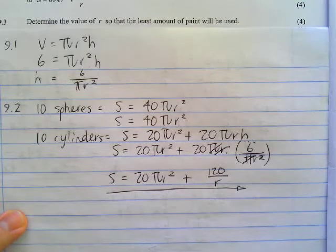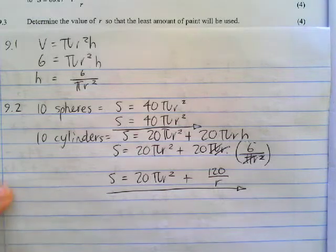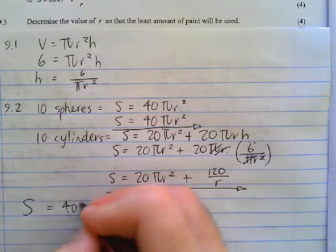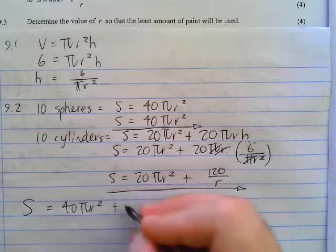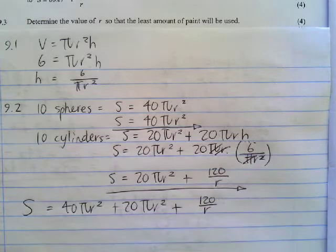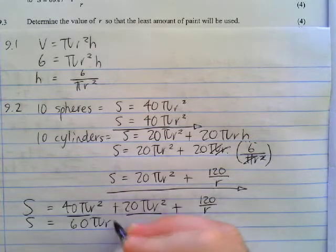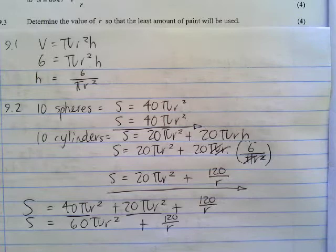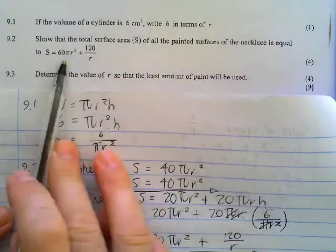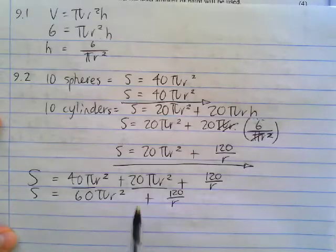So if that now is the surface area of our 10 cylinders, and that is the surface area of our 10 spheres, let's work out the total surface area of the necklace. It's going to be 40 pi r squared plus 20 pi r squared plus 120 over r. So the last step is to add these two like terms to give us 60 pi r squared plus 120 over r. And if you look at our question, that was indeed what we were hoping to achieve.